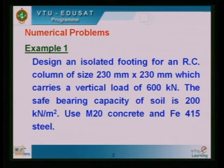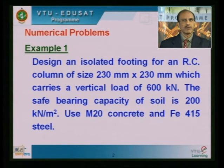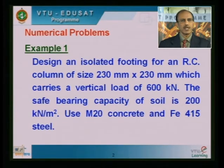I think we had just started this particular problem in the last class, and since we could not cover many things because of shortage of time, I would like to again go through this problem. We are trying to design an isolated footing for an RC column of size 230 mm by 230 mm which carries a vertical load of 600 KN. The other data required are the SBC of the soil which is 200 KN per meter square, M20 grade concrete, and steel Fe 415.